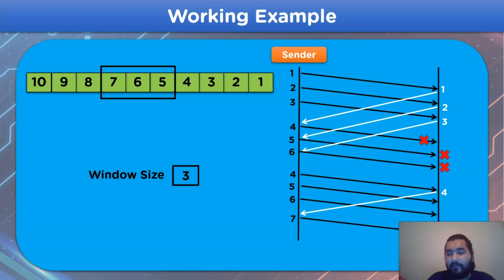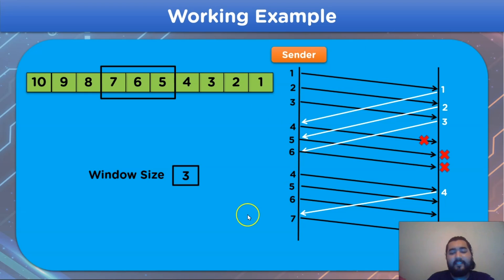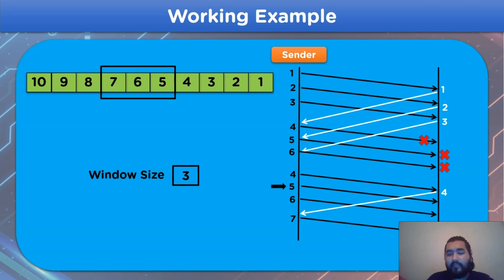Now let's move on to frame number 5, but first let's count its position in the transmission order: 1, 2, 3, 4, 5, 6, 7, 8 — that's correct. When counting position numbers from the beginning, we use the transmission order, not the frame sequence number given by the question. That means frame 5 is at position number 8 from the beginning, and according to the question it will get lost during transmission from sender to the receiver side.